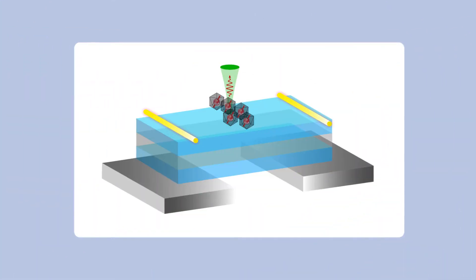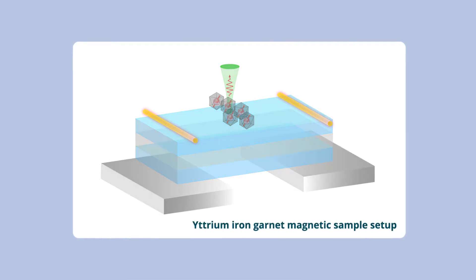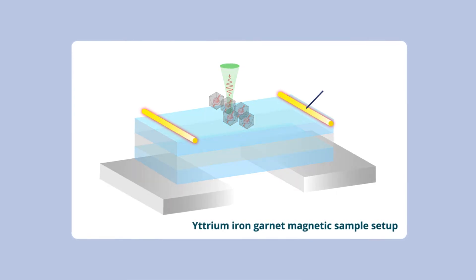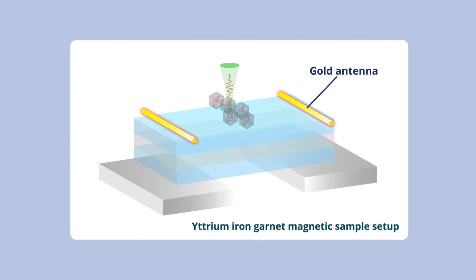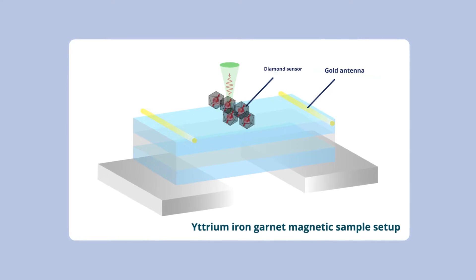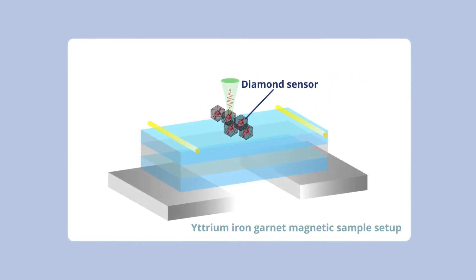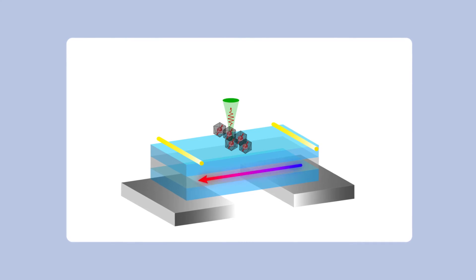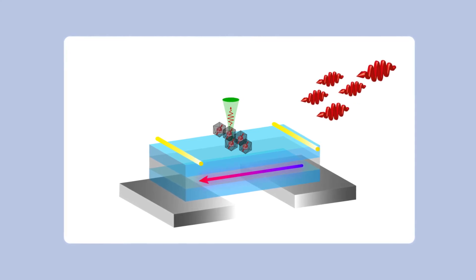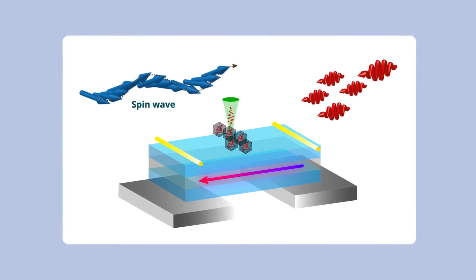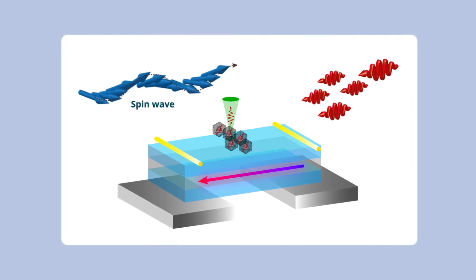To demonstrate this interaction, the team set up an yttrium iron garnet magnetic sample with gold antennas on either end of its surface, and a tiny diamond sensor right above its center. A temperature gradient was applied across the sample to generate magnons, and the setup was subject to low-energy spin waves generated by microwaves picked up by the antenna.